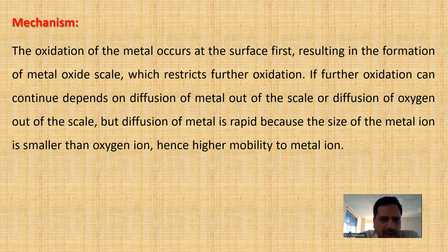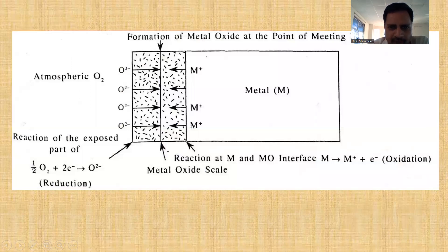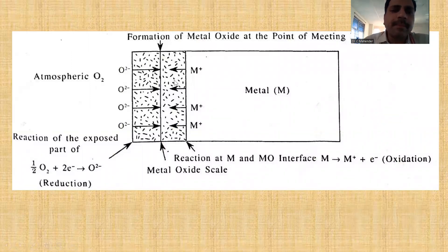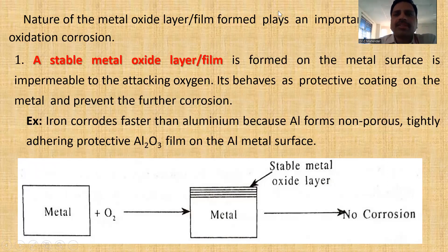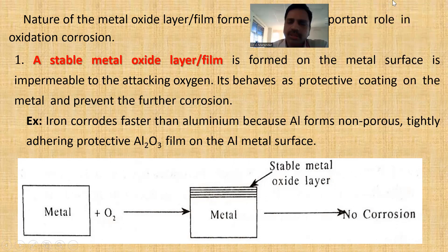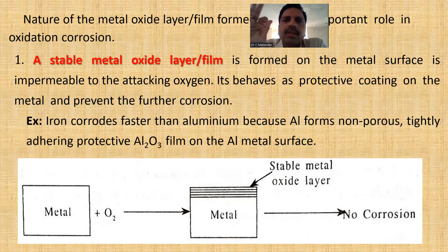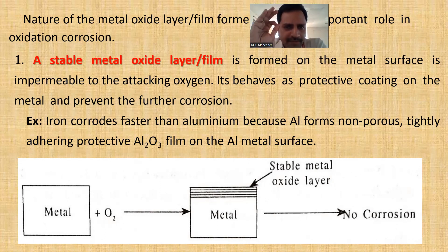Diffusion of the metal ion is more rapid because the size of the metal ion is smaller than oxygen. So the metal ion diffuses out from the metal oxide and undergoes further corrosion. The nature of the metal oxide film plays an important role in oxidation corrosion. The formation of the metal oxide determines whether the metal will undergo further corrosion or not. There are four cases: if the metal oxide is stable, if unstable, if porous, or if volatile.